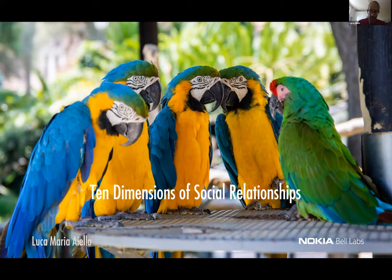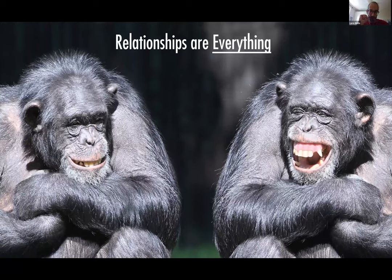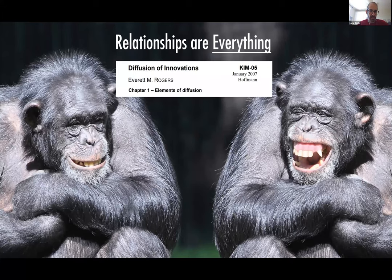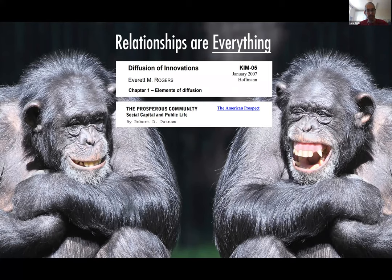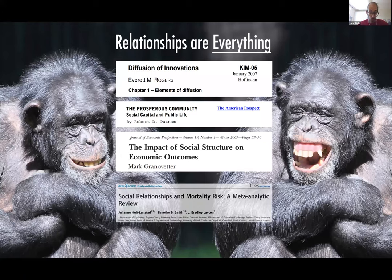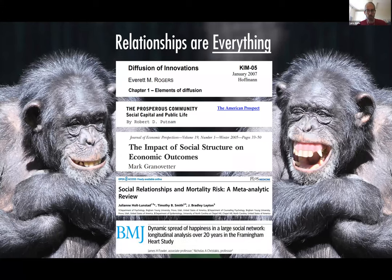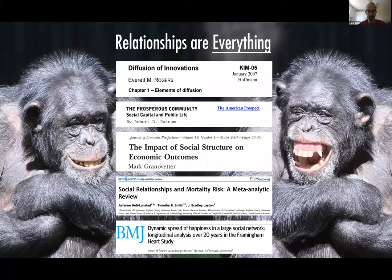Social relationships is one of the main focuses of my research, and that's what I'm going to be talking about today. Relationships are the single most important thing that we have in our lives — something we know intuitively, but that has also been shown by scientists. We know that relationships determine the diffusion of innovations and ideas, the prosperity of communities, even economic growth. They also prolong our lives and determine to a large extent our happiness. It's no wonder that research in network science is trying to predict these desirable outcomes out of social interaction data.